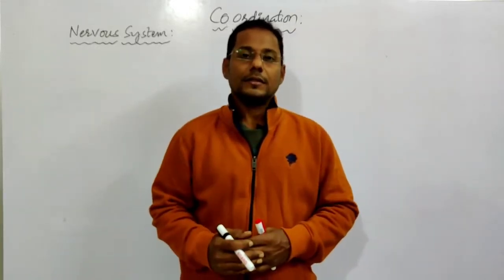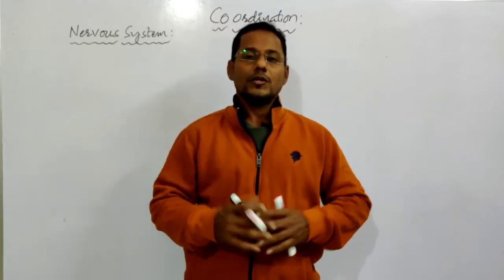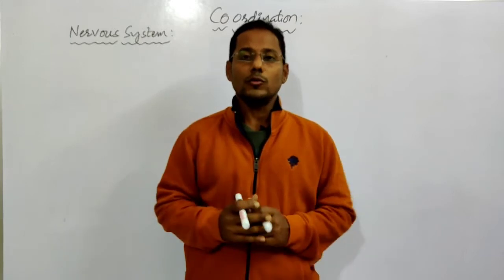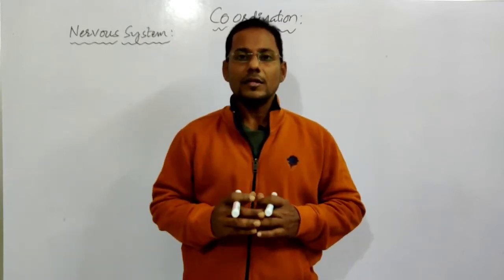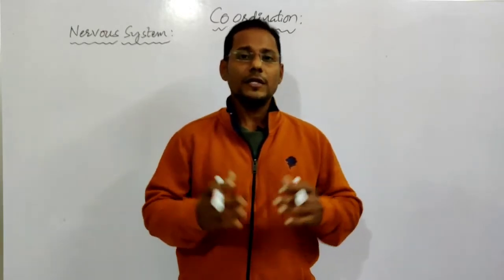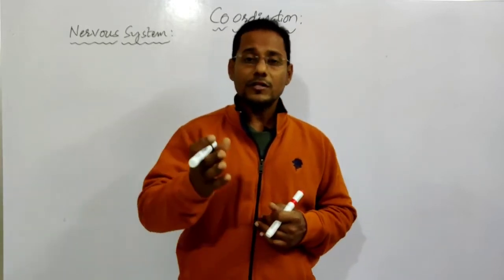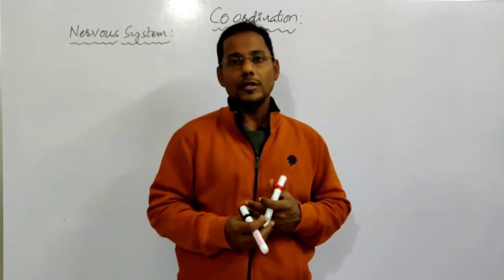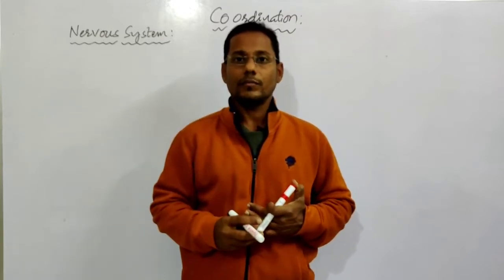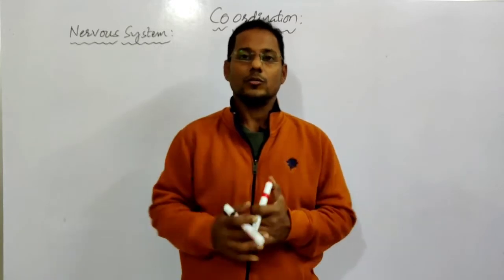In the previous class we have seen the structure of the neuron. In the nervous system, the neuron is both the structural unit and the functional unit. The complete nervous system is made up of these specialized cells called neurons. If the neuron works, then only the nervous system functions. If the neuron is dead, the nervous system becomes inactive.